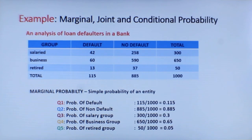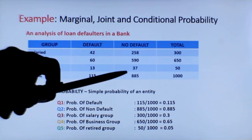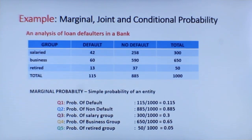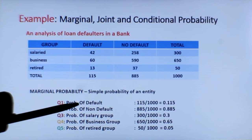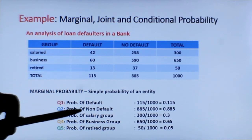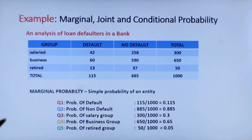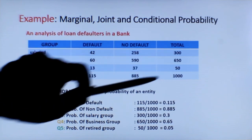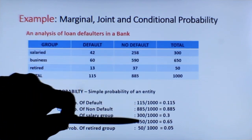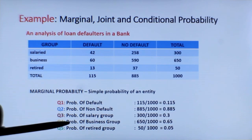Let us take a typical example — an analysis of loan defaults in a bank. There are three groups: salaried, business, and retired, with default and non-default status shown with totals. The marginal probability is the favorable event over total number of events. Probability of default is 115 over 1000, probability of non-default is 885 over 1000, probability of salaried group is 300 over 1000, business group is 650 over 1000, and retired group is 50 over 1000. These are all marginal probabilities.